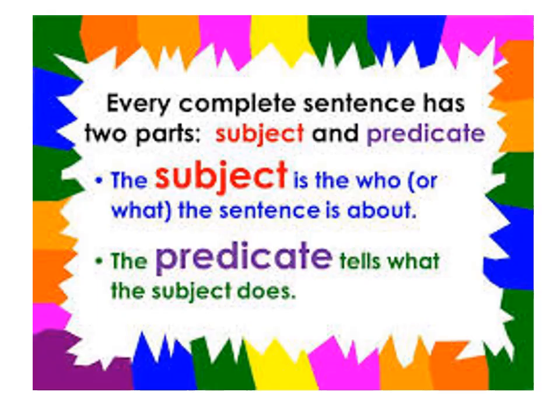In this grammar topic today, we are going to cover subject and predicate. A sentence is a group of words, and a sentence always contains a subject and a predicate. The subject is the person or thing that is doing the action — the 'who' or 'what' the sentence is about. The predicate tells what the subject does; it contains the action.